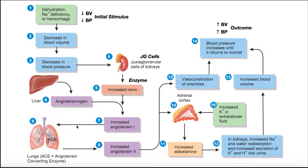In the previous video, we used this figure right here to talk all about the RAS pathway. RAS stands for Renin Angiotensin Aldosterone System, and it's a negative feedback loop that begins with low blood volume and low blood pressure. And through a series of processes which involve those three substances — renin, angiotensin 2, and aldosterone — we can actually raise the blood volume and raise the blood pressure back to normal.